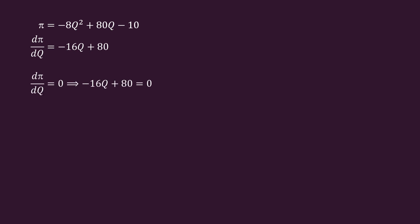Set the first derivative equal to 0. dπ/dQ equal to 0 implies minus 16Q plus 80 equal to 0. Solving this, we get Q equal to 5. Its interpretation is, when output is 5 units, the profit is maximum.